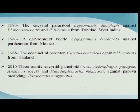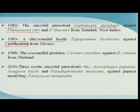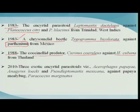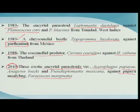In 1983, the parasitoid Leptomastix dactylopii was imported to control Planococcus citri, the mealybug. To control the notorious parthenium weed, the chrysomelid beetle Zygogramma bicolorata was introduced in 1983. In 1988, a coccinellid predator Curinus coeruleus was introduced to control Heteropsylla cubana, the subabul psyllid. Most recently, in 2010, papaya mealybug created havoc in southern India, and introduction of parasitoids like Acerophagus papayae gave good control of this pest.